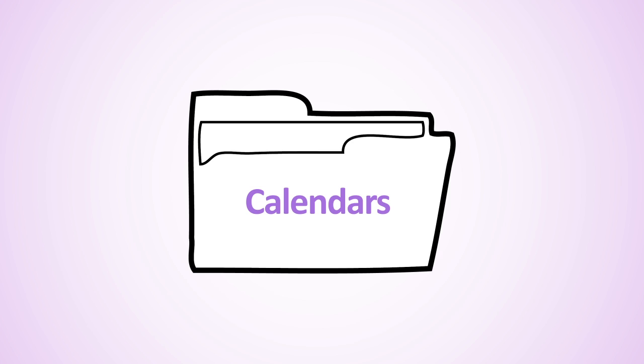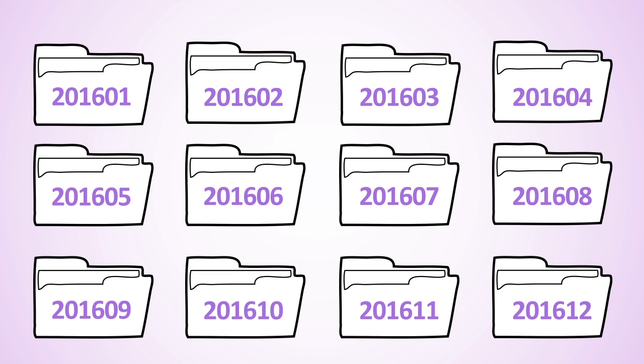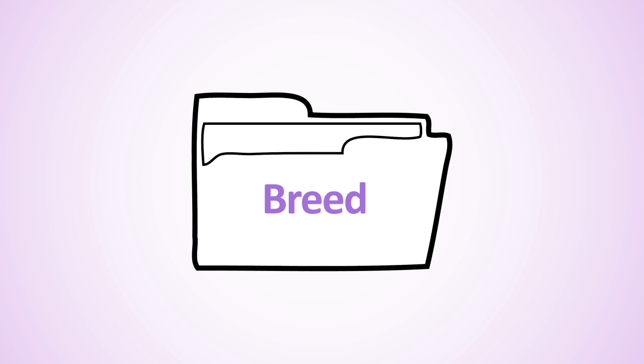Now let's put all these ideas together into one possible way of organizing this calendar project. First, you may want to create a calendar folder in a location that makes sense to you, but don't bury it in subfolders. Inside the calendar folder, make a 2016 folder. Inside of that one, create a folder for each month using the YYYY-MM format. Now, inside each month you can create further nested folders to your preference — maybe you want to differentiate by breed, or maybe by file format.